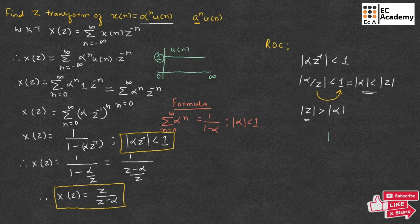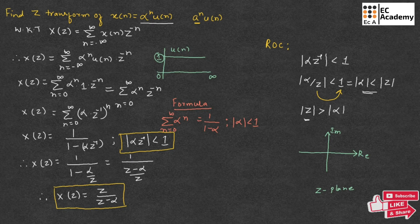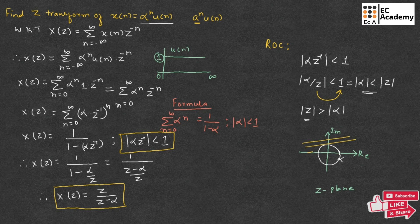Let us take the z-plane, where the x-axis represents the real term and the y-axis represents the imaginary term. On this z-plane, let us mark a point alpha and draw a circle with radius alpha. The region of convergence is where the magnitude of z is greater than alpha, which means the ROC is outside this circle. This is the region of convergence for the given problem. Hope you have understood the topic. Thank you.